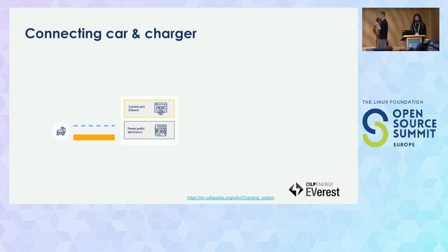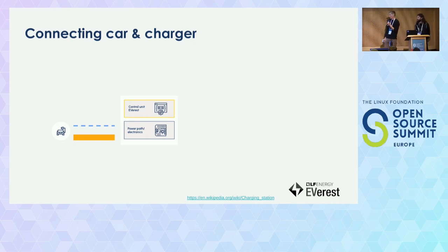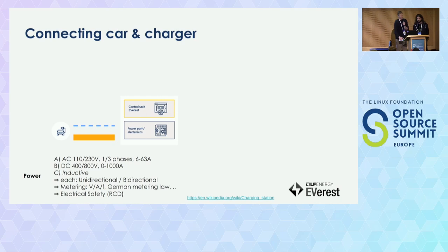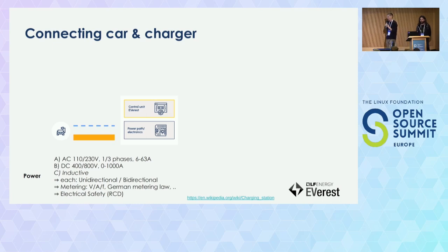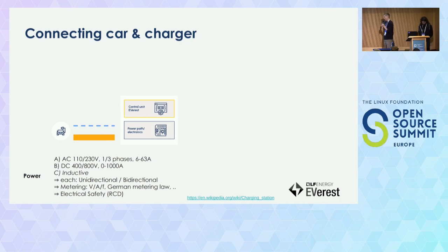What do you need to charge your car? You basically need a charging station, which usually consists of a control unit — a small embedded Linux device, for example — and some power electronic parts. Then you need a car, and you establish a data link and a power link. Speaking of power, there can be different types. You can do AC charging with different voltage levels, on one, two, or three phases, and with different currents. You can also do DC charging, which is usually a lot faster than AC charging and more expensive. You can also think about inductive charging.